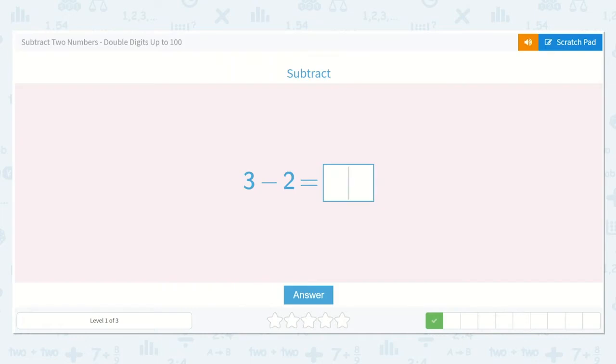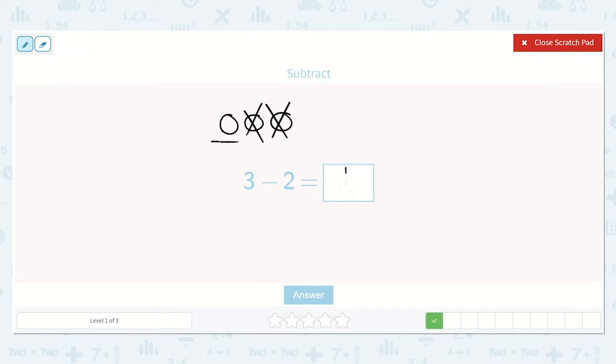Next we have 3 minus 2. 1, 2, 3, and then we take two of them away. 1, 2. How many do we have left? Just one.